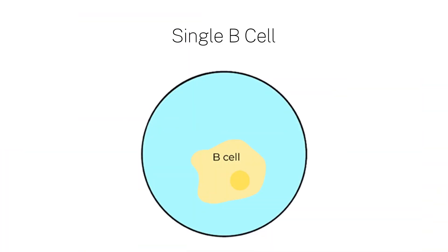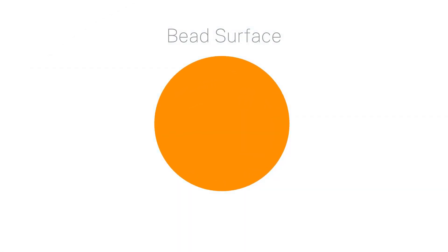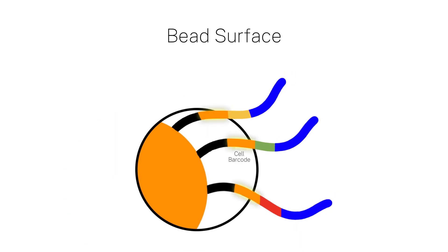To set up a single-cell experiment, B cells are first sorted into droplets or wells, each containing a bead. Attached to the bead surface is a barcode identifying the cell and a UMI with a random, unrepeated sequence. Following the barcode and UMI sequence is a polydeoxythymine stretch. The template mRNA binds to this polyDT sequence during processing.